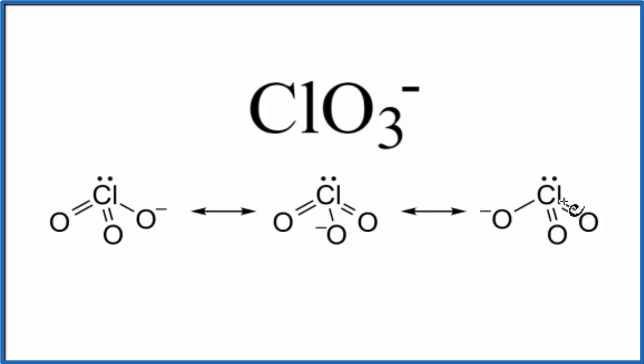But that's one of the limitations of Lewis structures. It's hard to show that. So we often use resonance to make that clear. This is Dr. V with the resonance structures for ClO3-, the chlorate ion. Thanks for watching.